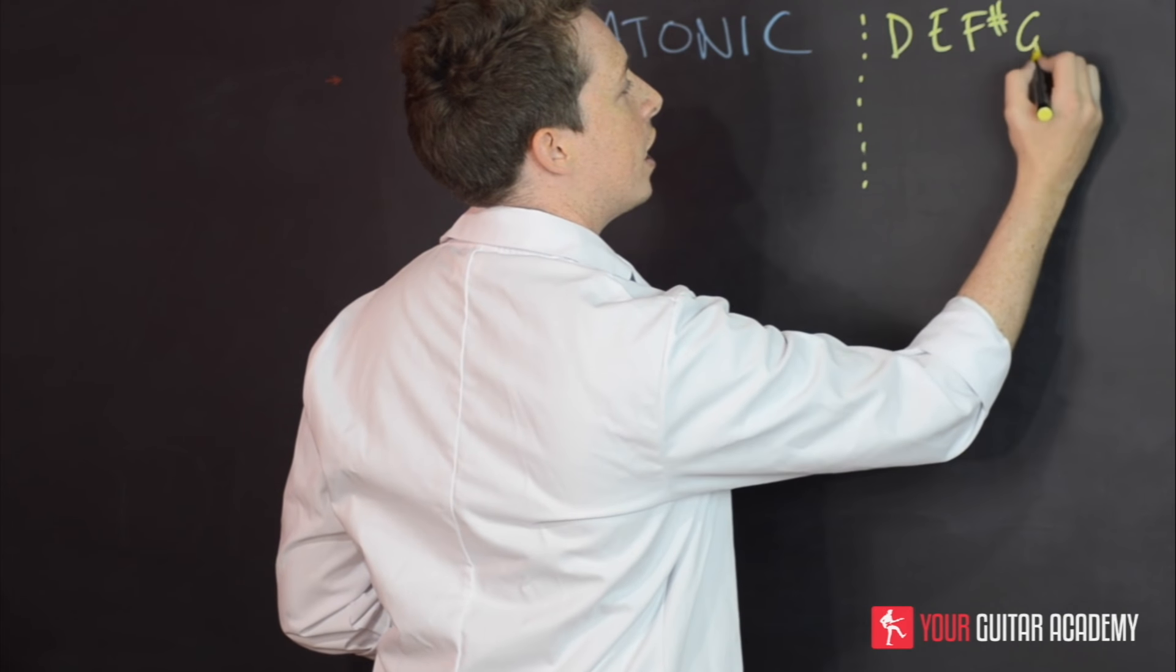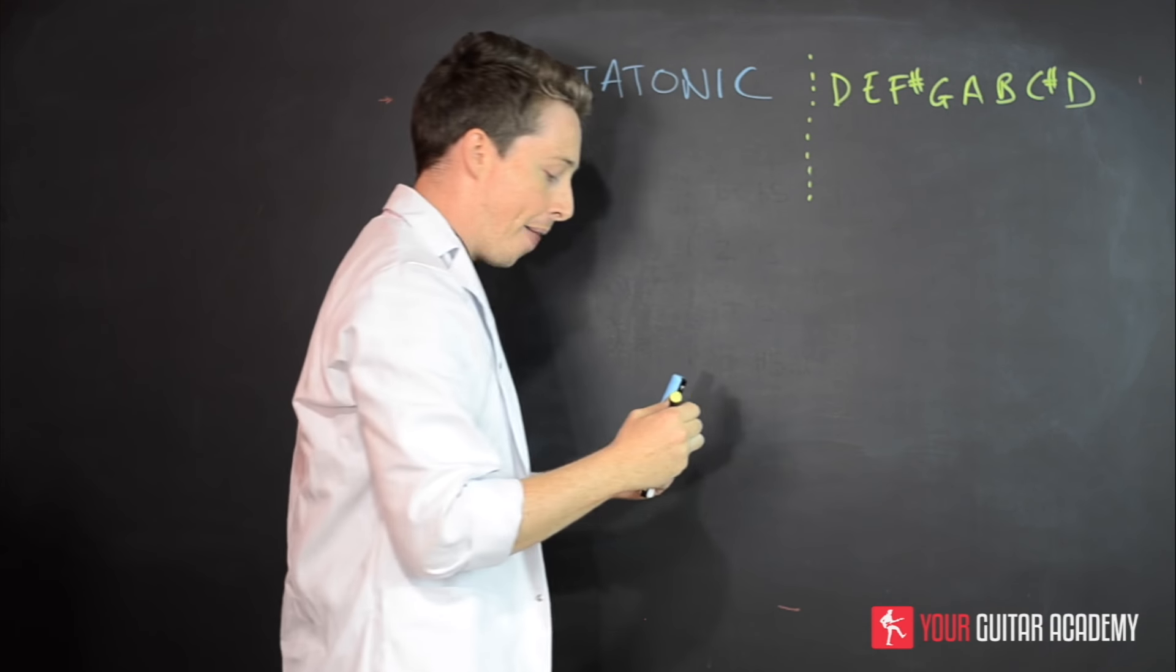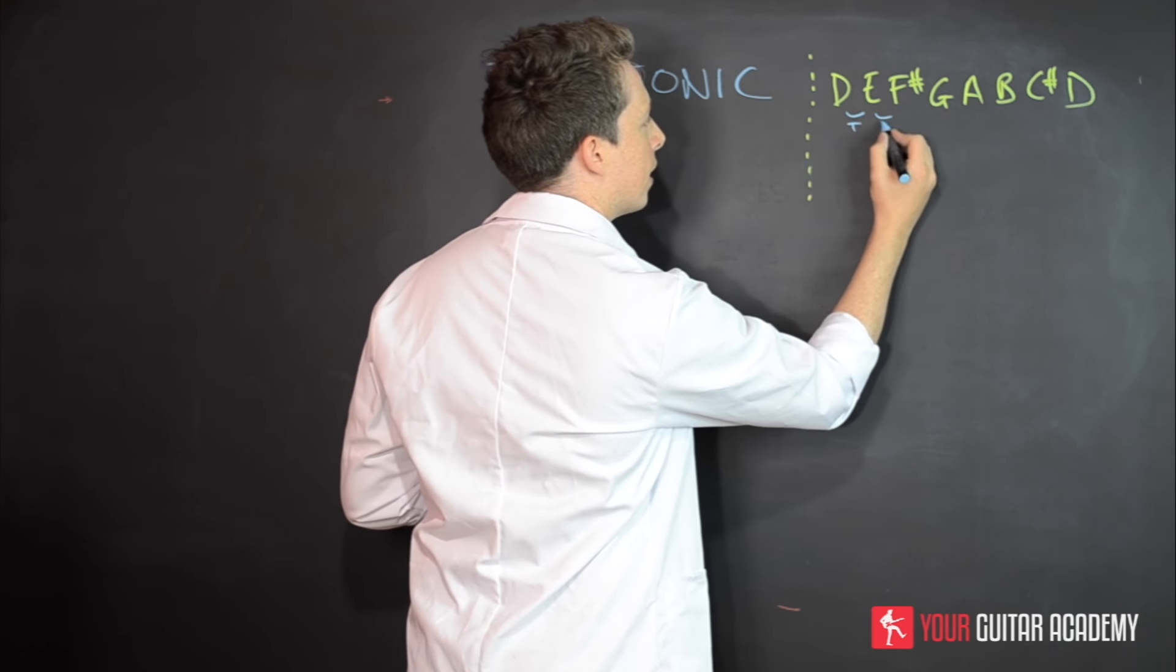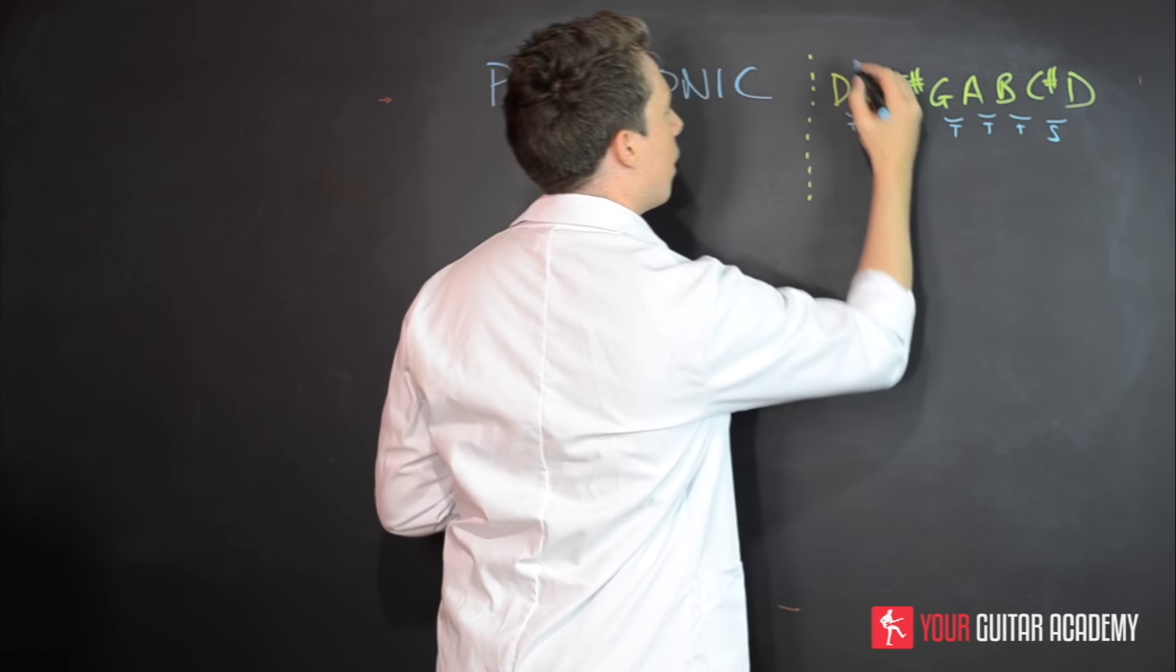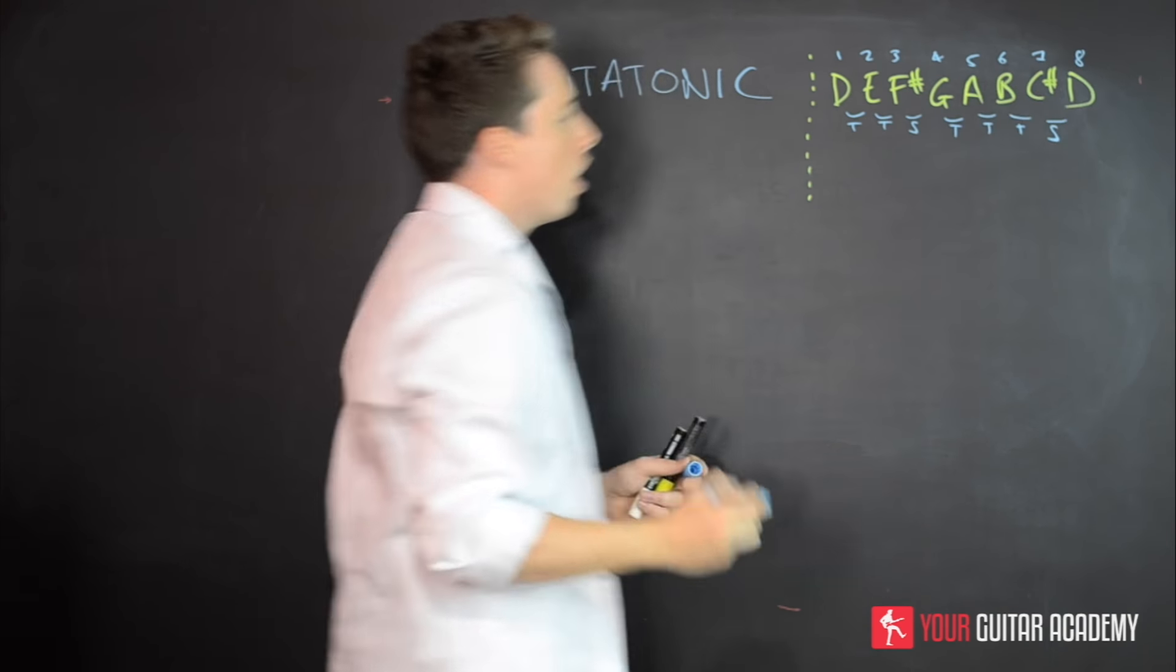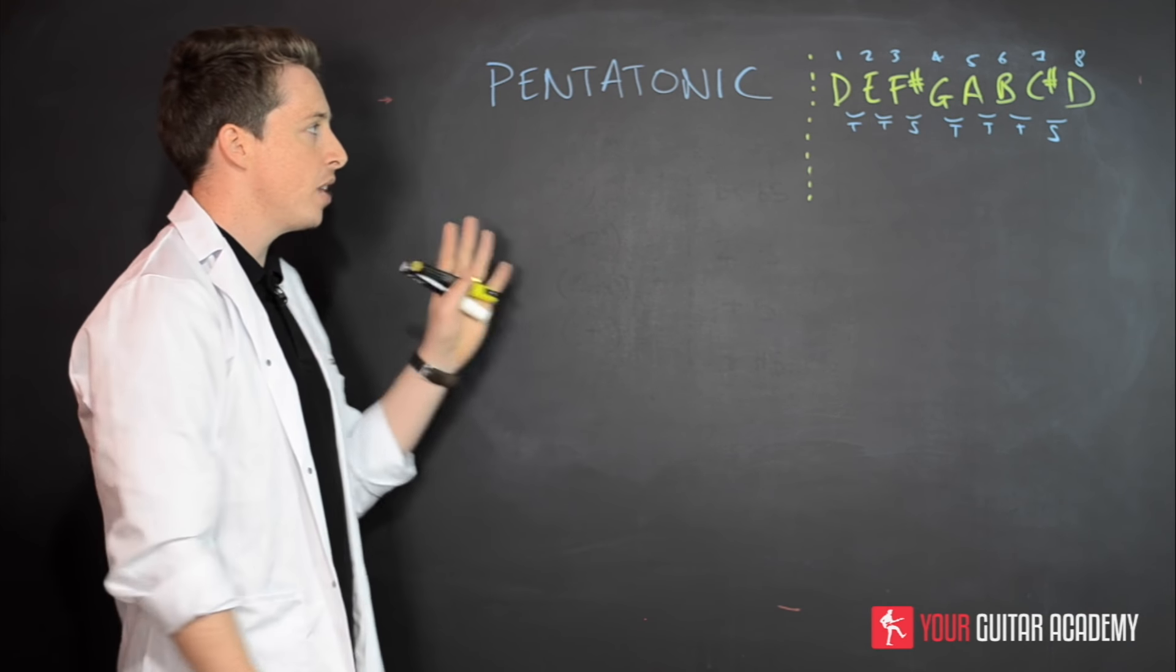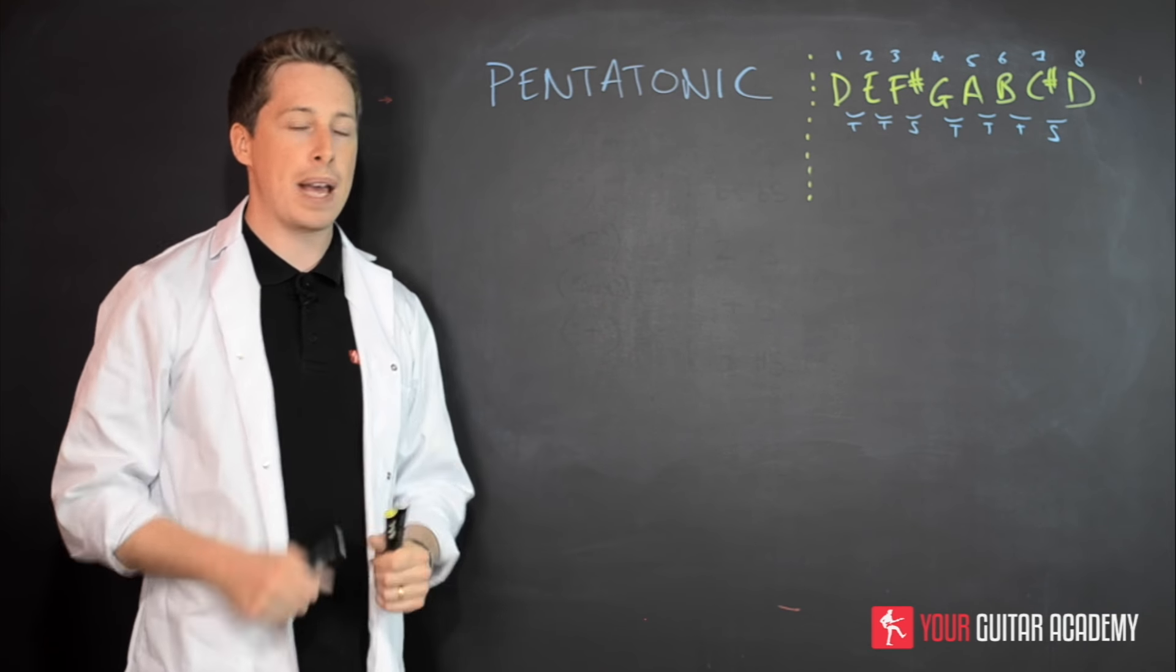And that is your D major scale. And again just to really constantly go over and over this, I found that because I did tone, tone, semitone, tone, tone, tone, semitone, that gave me my major scale. So with that written down somewhere on a piece of paper or even if you're just following me on the board here, have that there ready to go in your head, because next time we're gonna dive straight in and look at how to construct these pentatonic scales.